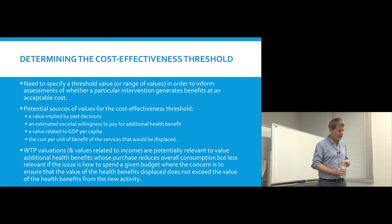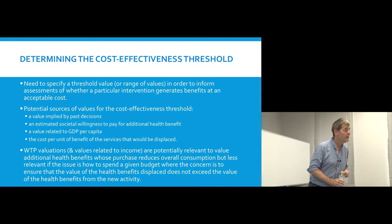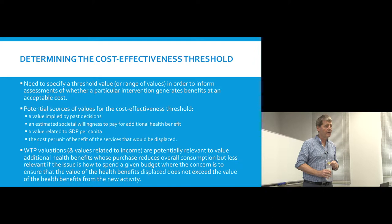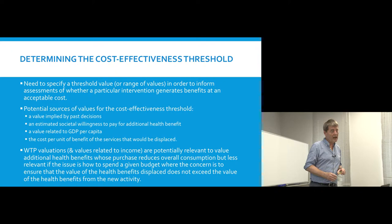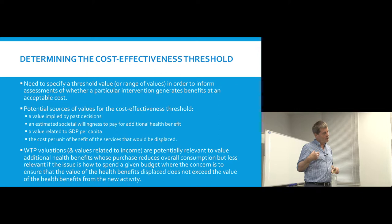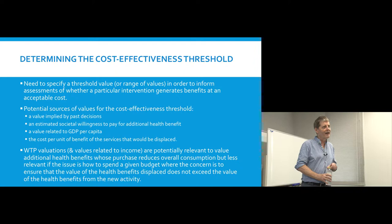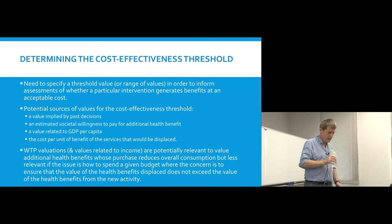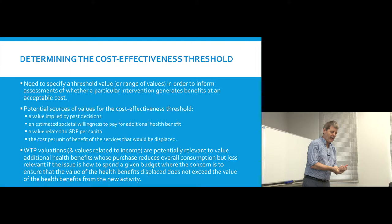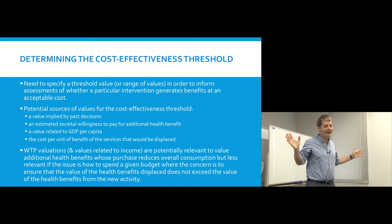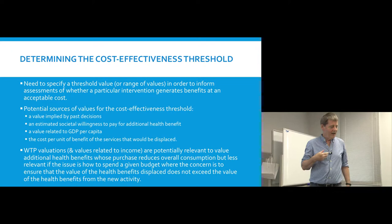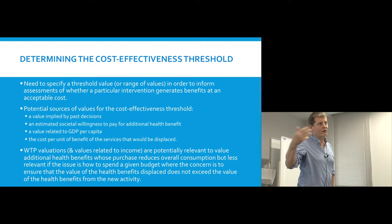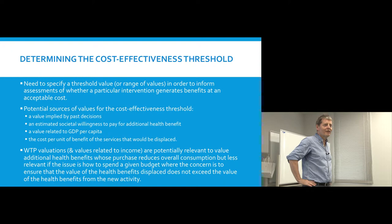A second potential approach for identifying a cost-effectiveness threshold is to try to identify society's willingness to pay for additional health benefit. In a context such as Japan, or England, where the healthcare system is predominantly funded through taxation, how much are taxpayers willing to pay — how much more tax would they be willing to pay — in order to get additional health benefits? This approach has been used, but the estimates cover a really wide range. And maybe it's not surprising, because asking an individual how much they are willing to pay to acquire additional health benefit is quite a tough question for most people.